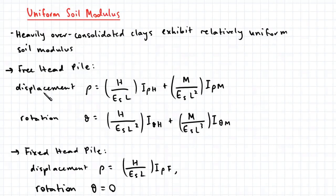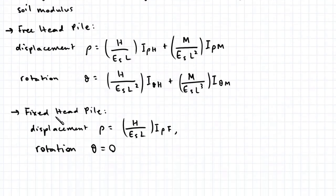For free head piles, the displacement and rotation are given by these equations, where H and M correspond to the horizontal load and moment applied to the top of the pile respectively. For fixed head piles, the displacement is given by this equation and there is no rotation.